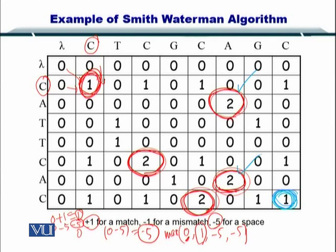So here you have 2, 2, 2, and another 2. So by selecting these highest score positions, you are going to start a traceback.